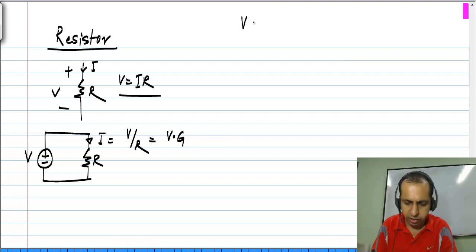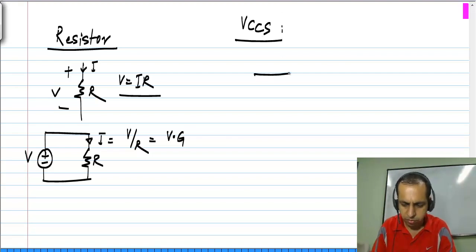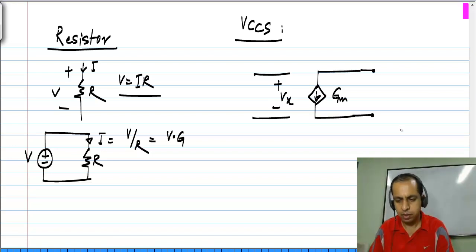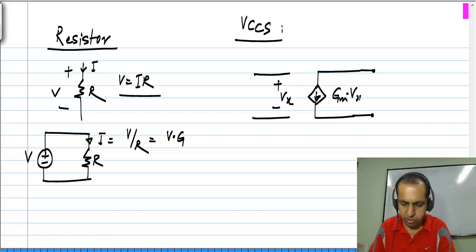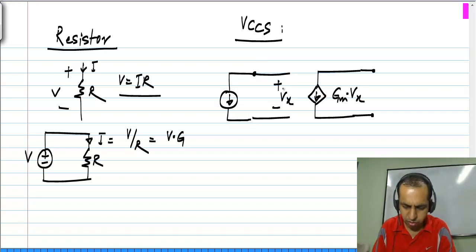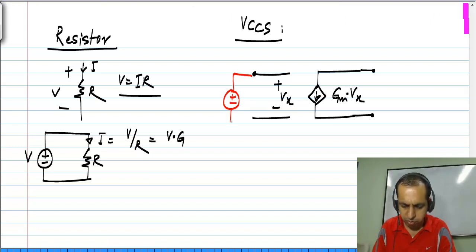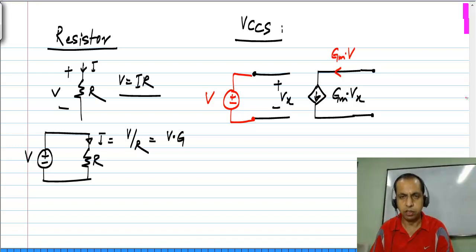If we take a voltage controlled current source, there is a certain voltage Vx, and let me define this to be Gm times Vx. What it says is: if I apply a voltage V here, a current Gm times V will flow over there.